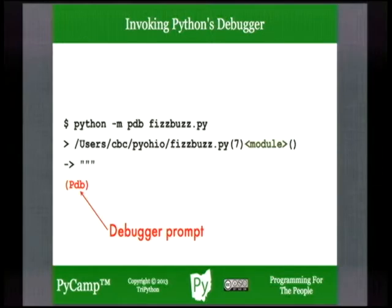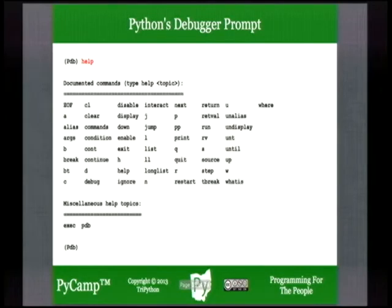At this point you might be freaking out — you don't know any Python debugger commands. That's okay. There's only one you really need to remember, and that's 'help'. Just like the Python interactive prompt has a help function, the Python debugger has a built-in help command. It's not a function — it's a command, so you don't put parentheses after it. You're in the debugging environment now, entering debugging commands.